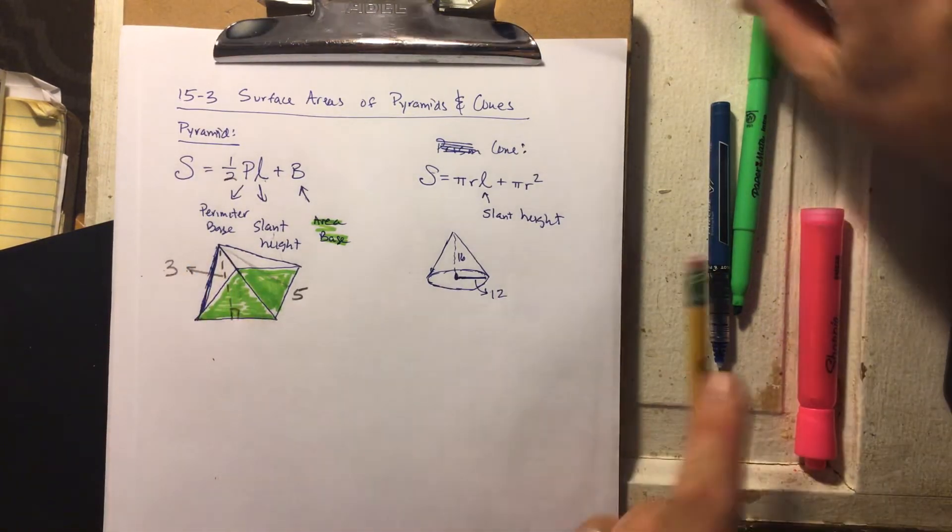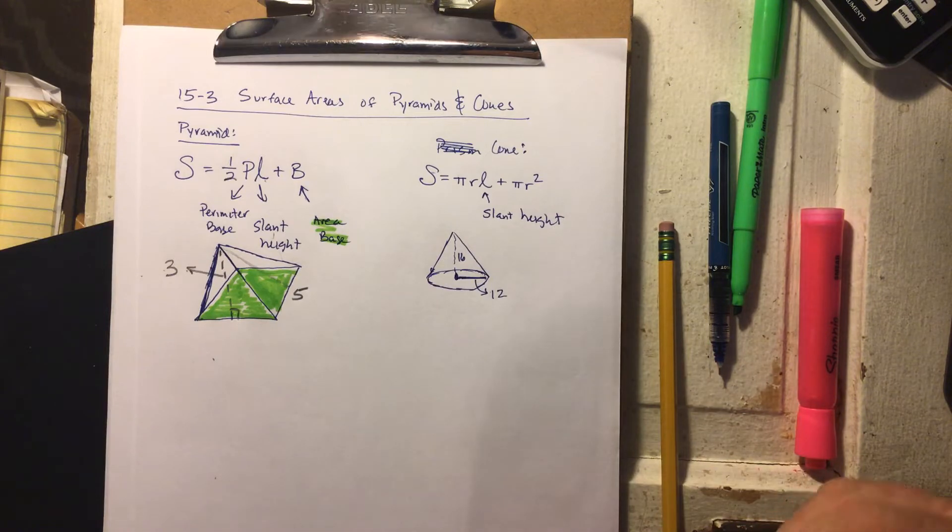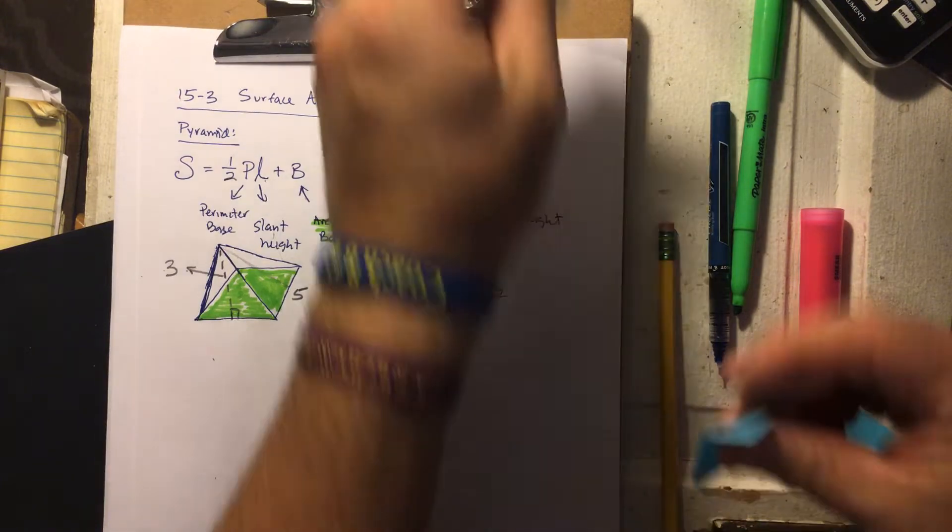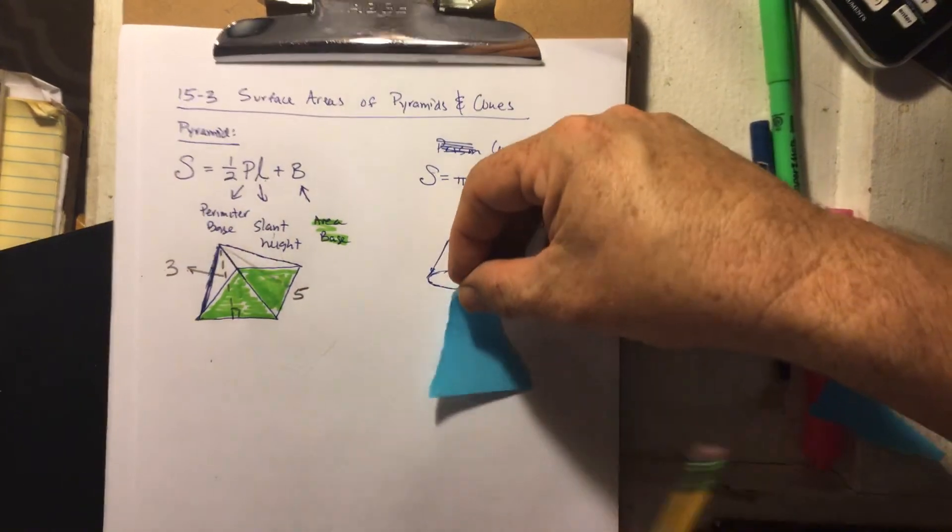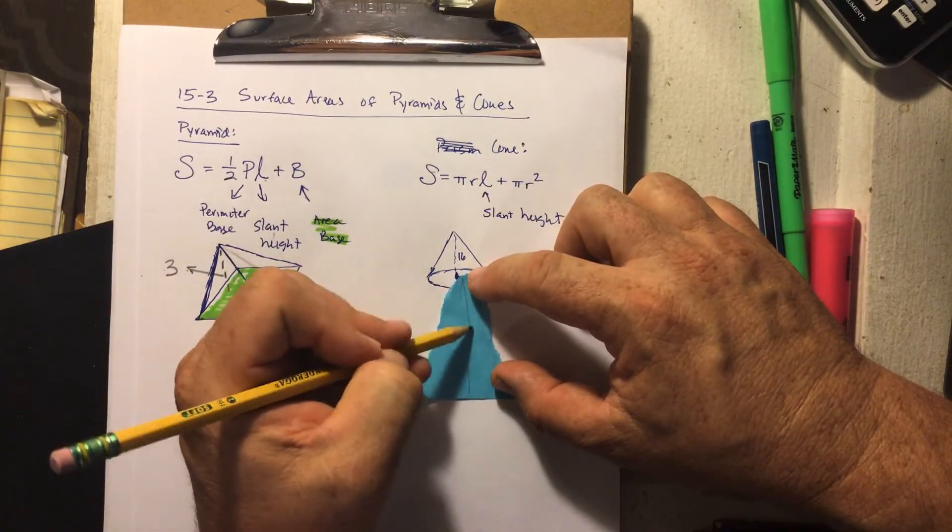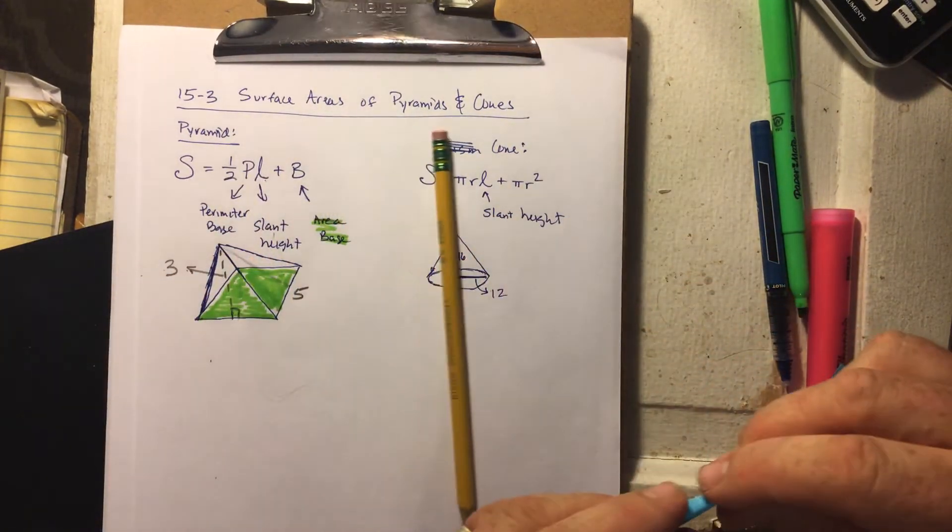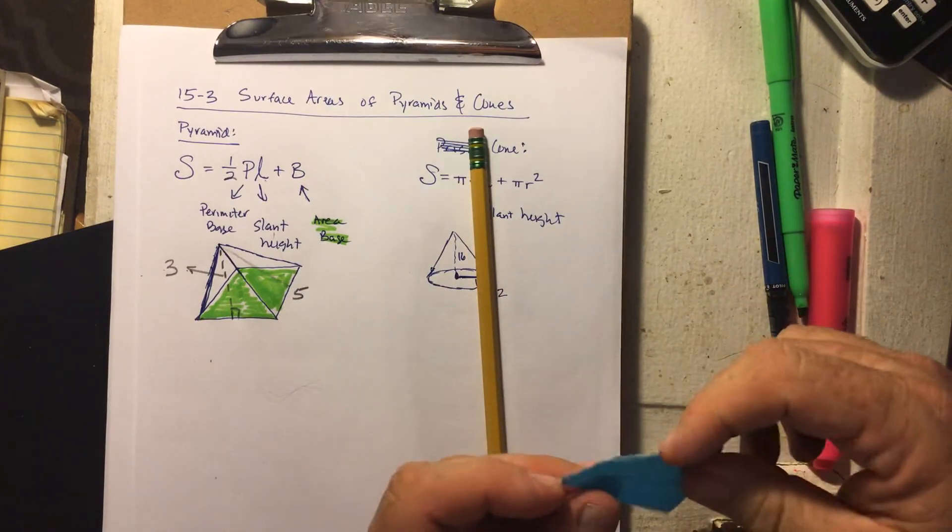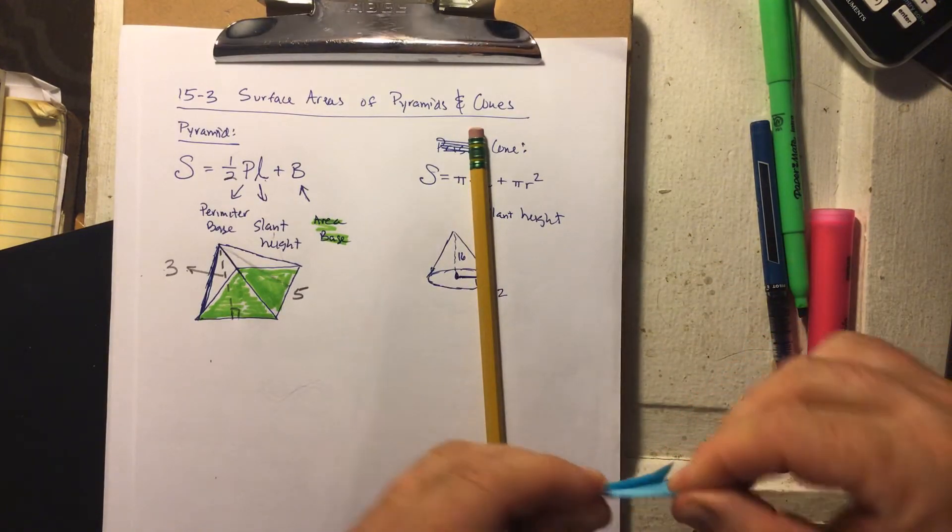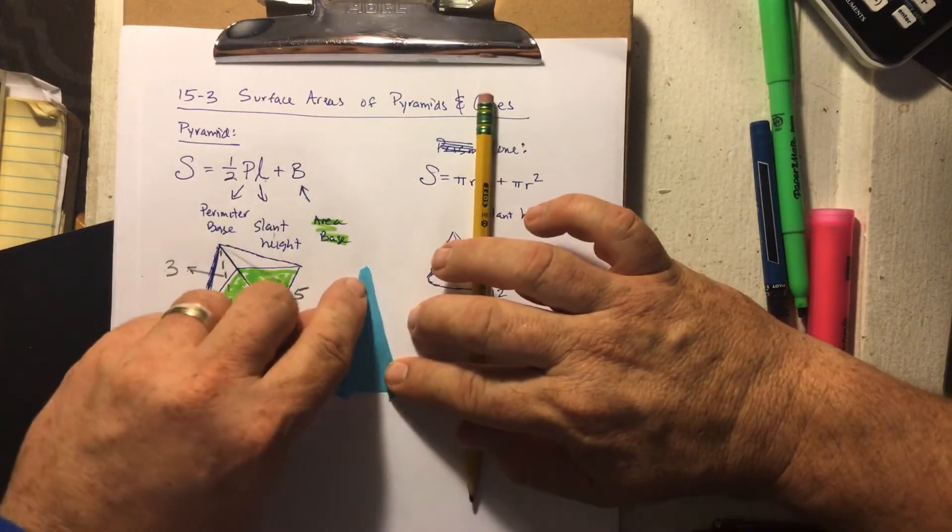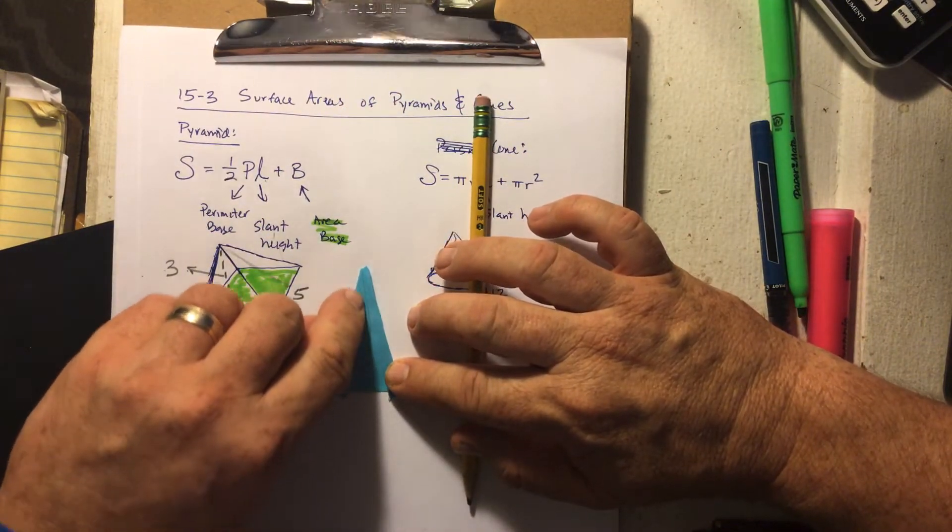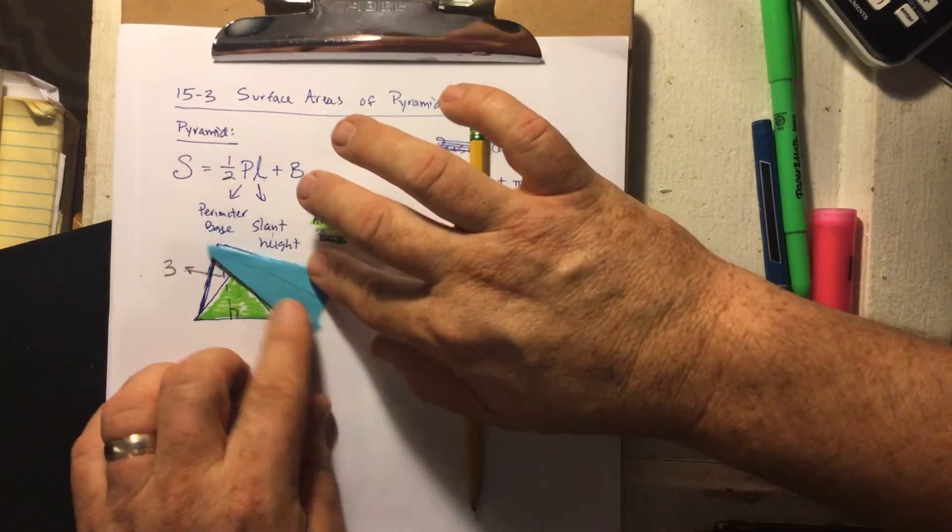If I was to take this face like this and pull the face off, even though it's not a very good triangle, that line that I just created, basically we have the triangle, we pull the face off. This line down the middle that I just created, that's the slant height. It's the slant from the side to the tip.